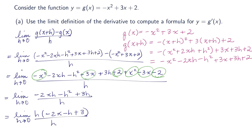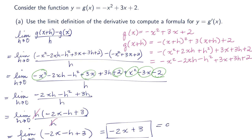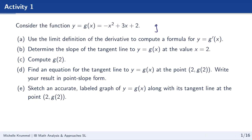We can eliminate h from the numerator and denominator, leaving us with the limit as h approaches 0 of negative 2x minus h plus 3. To take this limit, we substitute 0 in for h, and we get negative 2x plus 3. So g prime of x equals negative 2x plus 3.